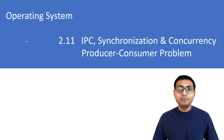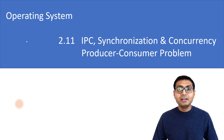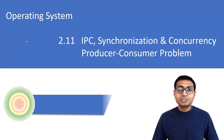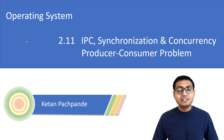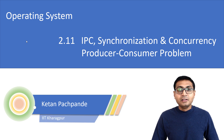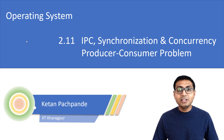Welcome back. So far we have completed program versus process, how the OS executes the process, the process structure in detail, and the CPU scheduling algorithms. In this session I am going to cover the next topic under process management, which is inter-process communication, synchronization and concurrency.